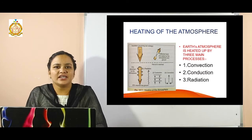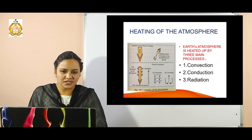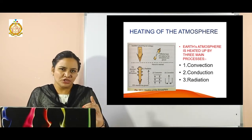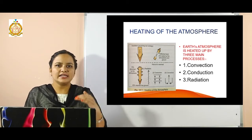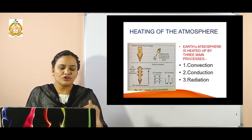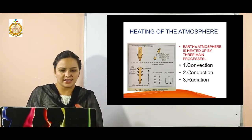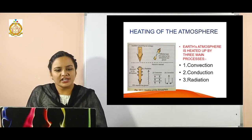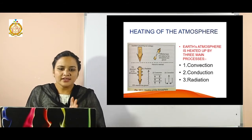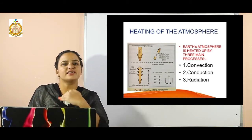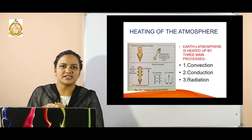The heating of the atmosphere can be explained through a diagram. When sun energy comes to the earth's surface it is 100 percent. When it reaches the earth's surface it is divided: 15 percent is absorbed by the atmosphere in various gases, 45 percent reaches the ground — making a total of 60 percent — and 40 percent is reflected back to the atmosphere and goes into space.